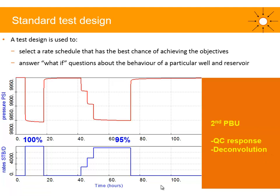Test design is used to select a rate schedule — including PBU duration — that has the best chance of achieving the subsurface objectives, and this requires some iteration. A test design is also used to answer what-if questions about the behavior of a well and a reservoir. You may want to do sensitivities by varying different well and reservoir parameters to see the type of response on the derivative. This helps build understanding of the test and the impact of different parameters, and also better prepares you for operations.